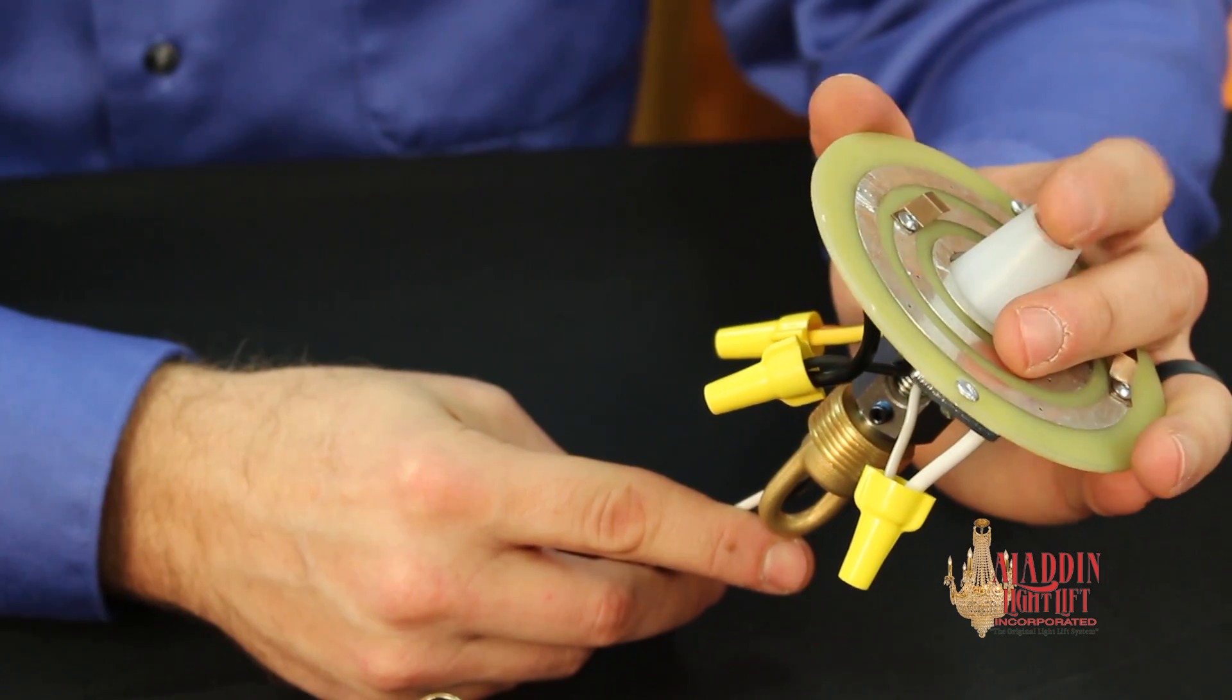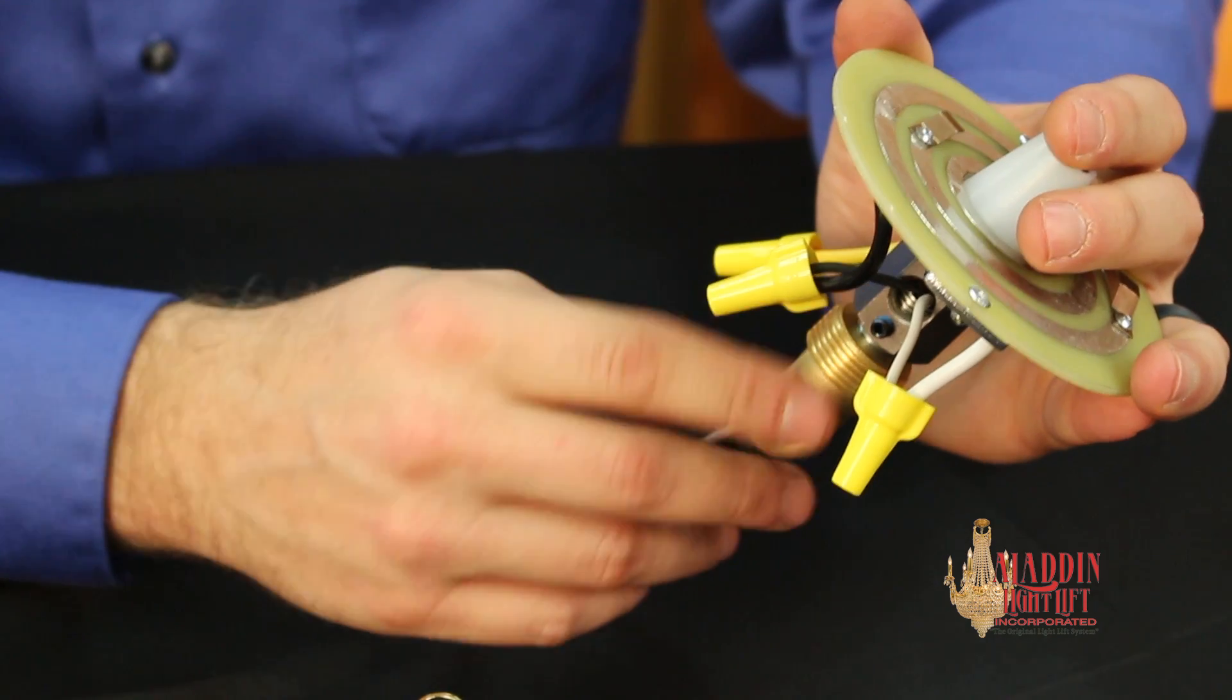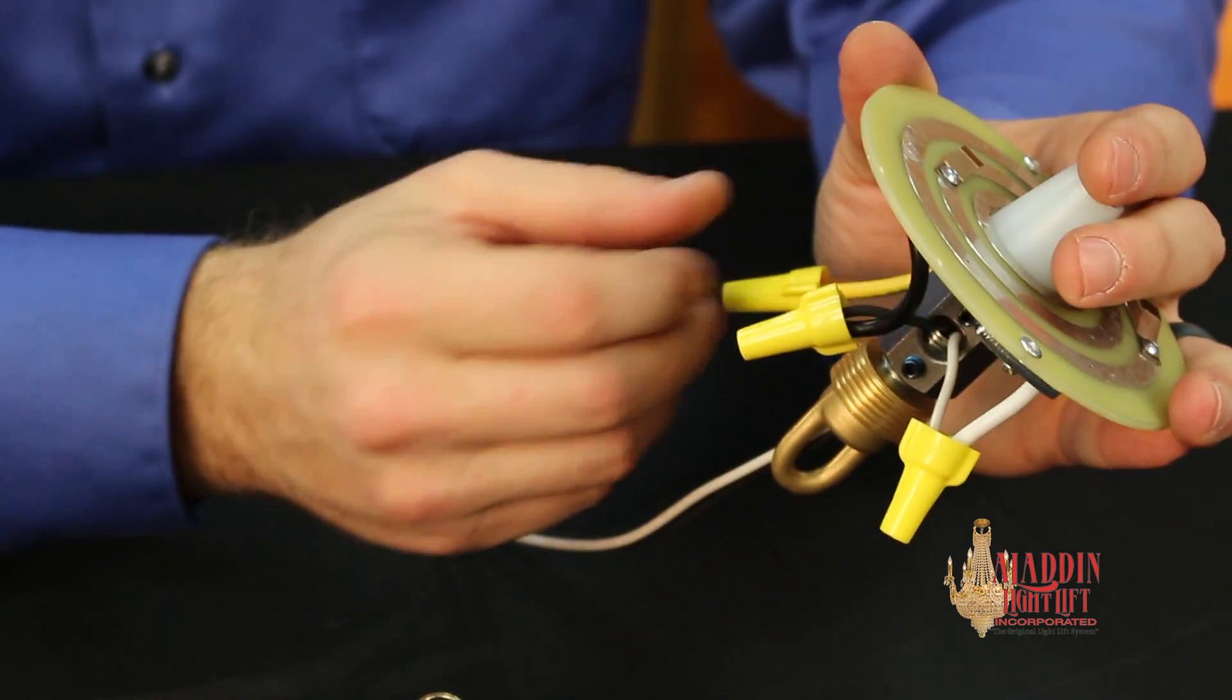Pull the light fixture wires through the hole in the coupler. Using wire nuts, connect them to the bottom contact plate wires.